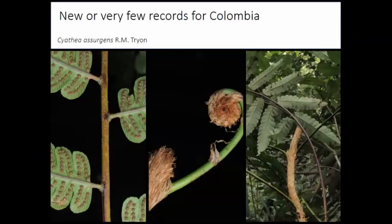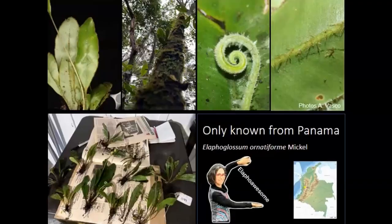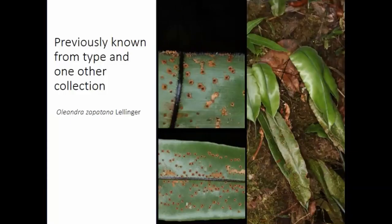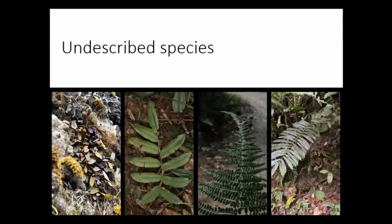We also found a lot of new records for Colombia. This Siathia had only been reported from Ecuador, and this Elaphaglossum had only been known from Panama prior to our collection. This Oleandra was previously only known from the type and one other collection — it's a Choco-endemic species. And of course, we are also encountering many undescribed taxa, including an Elaphaglossum, Parablechnum, Prisonia, an Epidirogrima, and a Dennea — all of which need describing.